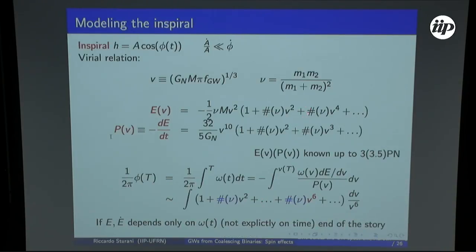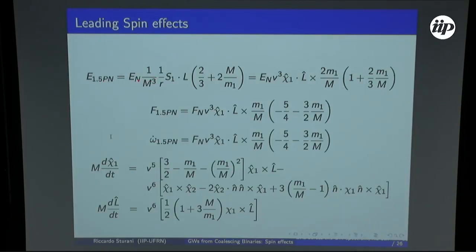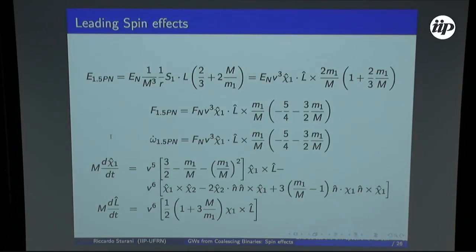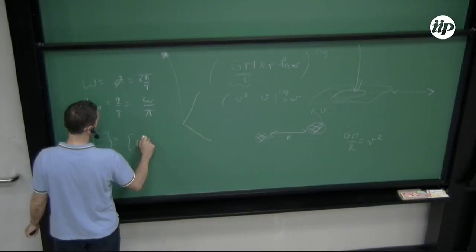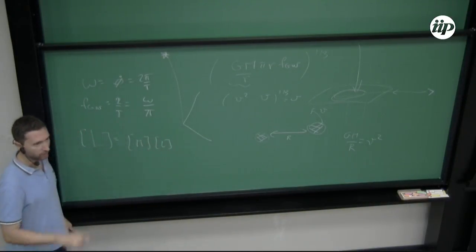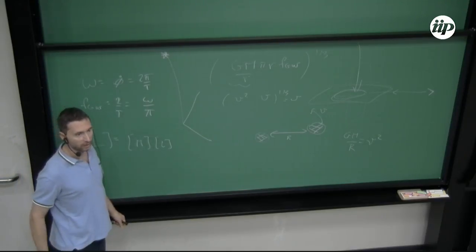The first level at which spin enters is at 1.5PN order, meaning v-cubed. The v-cubed term, which was missing in the non-spinning case, is present once we have spin. It can be written as the Newtonian term times something small of order v-cubed. It includes the scalar product spin1 dot L-hat. The spin of the object - an angular momentum - has dimensions of mass times length times velocity. In natural units where velocity is divided by the speed of light, a spin is just a mass-squared times G_Newton, and can take all values from zero to one times the mass-squared of the object.